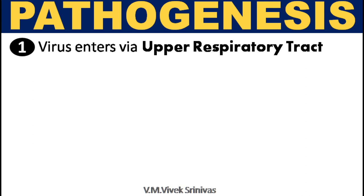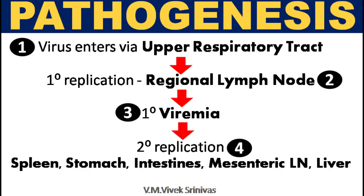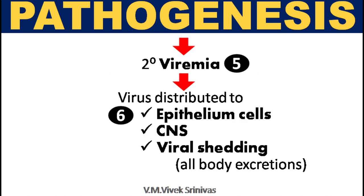Pathogenesis: Following entry of the virus through the respiratory tract, the virus does its initial replication at the regional lymph nodes, followed by viremia. The next replication occurs at the spleen, stomach, intestines, mesenteric lymph nodes, and liver. Following secondary replication, the virus gets distributed through secondary viremia to the epithelial cells and central nervous system, with subsequent viral shedding through all body excretions.